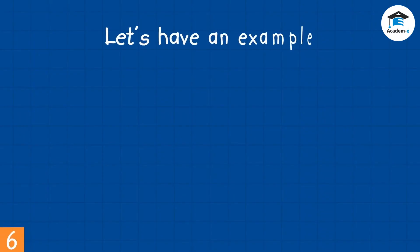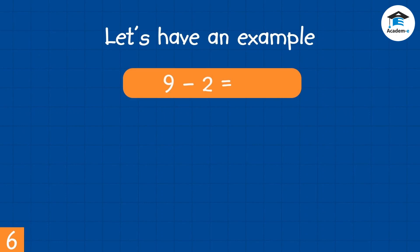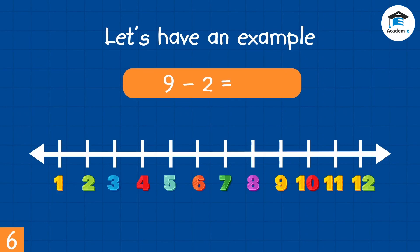Let's have an example subtracting using a number line. 9 minus 2 is equal to? Here is the number line. We start at 9, then count 2 steps backwards: 1, 2. We end at 7. Therefore, 9 minus 2 is equal to 7.